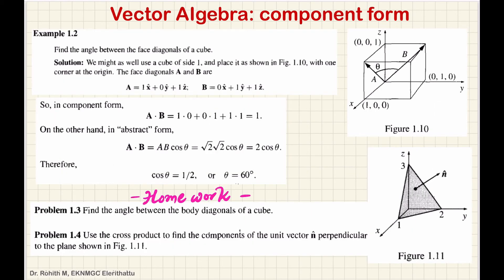Now, let's discuss one example — it is example 1.2 in the Griffiths textbook. Find the angle between the face diagonals of a cube. So we have a cube with one side length of one unit.